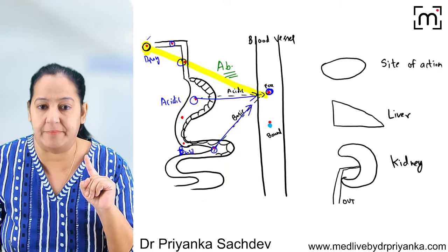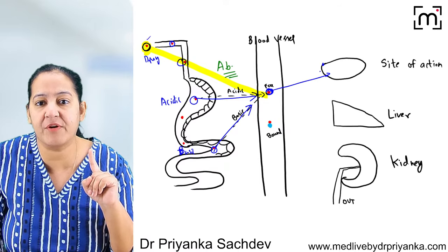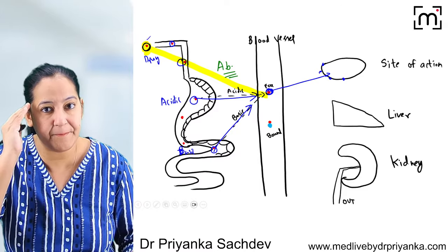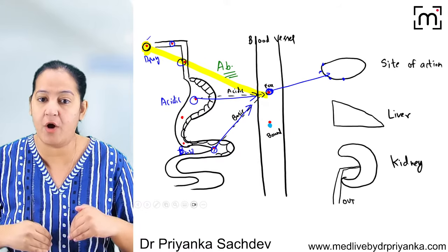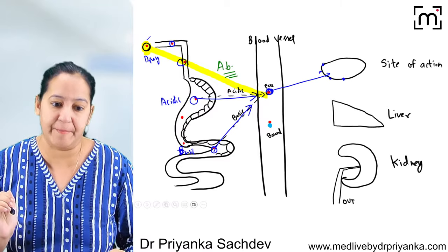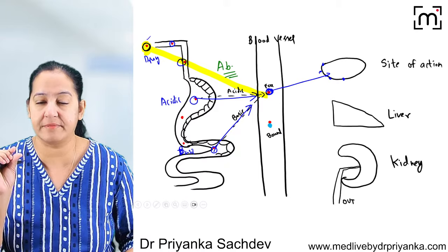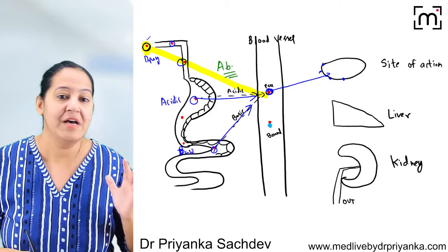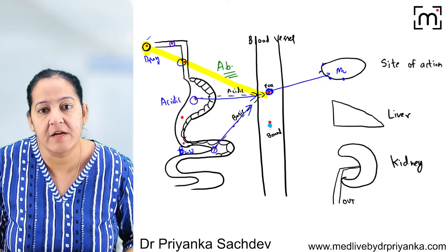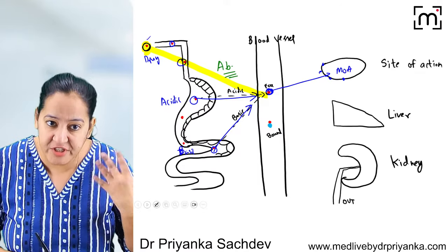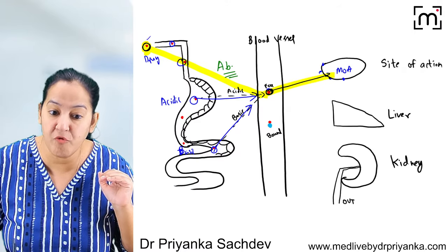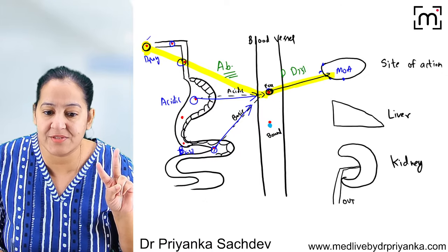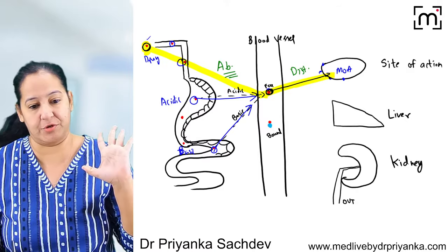From the circulation, the drug moves to its site of action, where receptors for that drug are present on the particular organ. For migraine, receptors are in the brain or cerebral blood vessels; for diarrhea, in intestinal epithelial cells; for heart failure, in heart cells. Drug reaches its site of action and shows its mechanism of action. This movement from blood to the site of action is known as distribution.